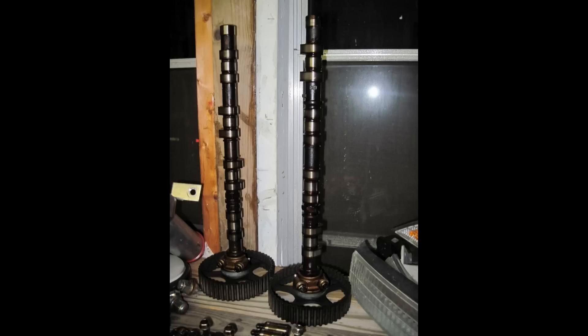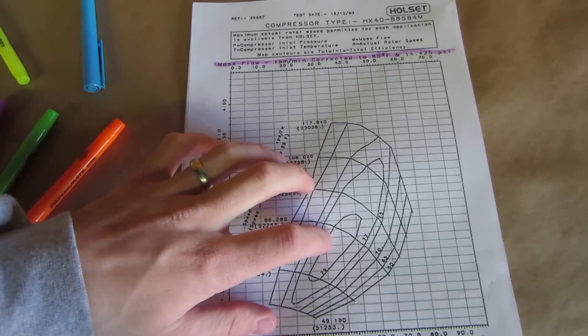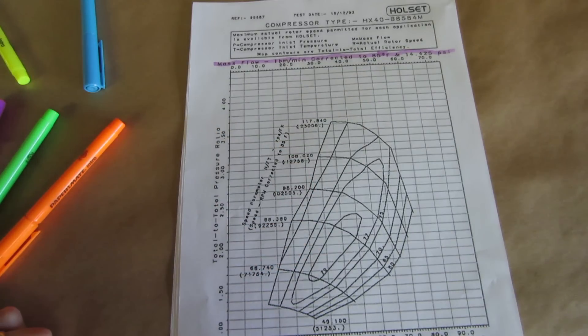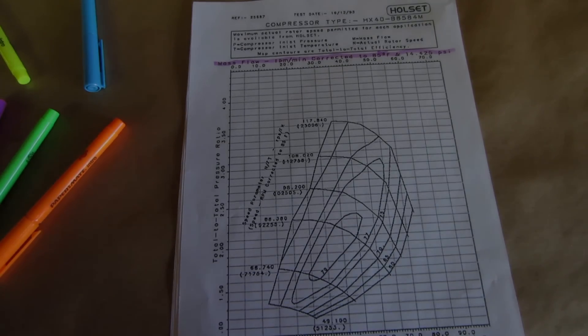Now that you know how to read a compressor map hopefully you can choose a turbo to fit your application. While it will be impossible to calculate everything from this one simple map it will let you know exactly what the compressor map of each individual turbo is capable of at a glance. This map is only for the compressor so matching the turbine and exhaust housing to maximize the turbo's potential in your application is a must. Hopefully this solves the mystery of how to read a compressor map. Happy boosting!